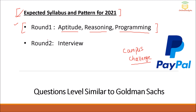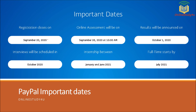Some details have been given on the PayPal website as well. Registration is closing on 20th September 2020. The online assessment will be on September 26, 2020 at 10 AM. Results will be announced on October 1st, and interviews will be scheduled in October 2020. Internship starts January to June 2021.